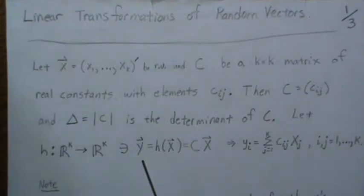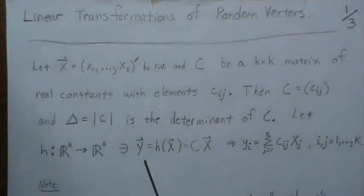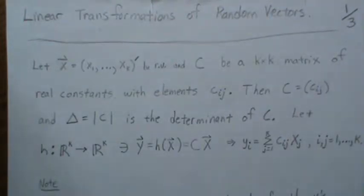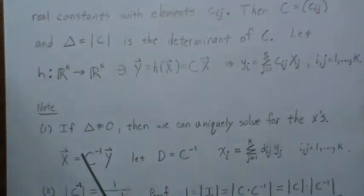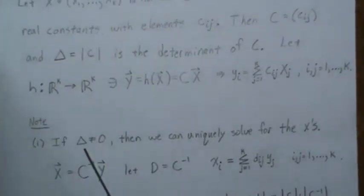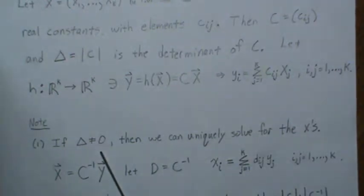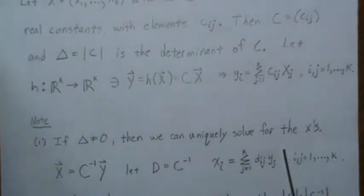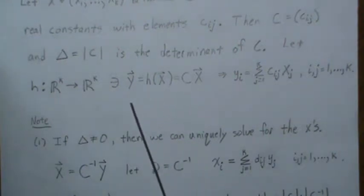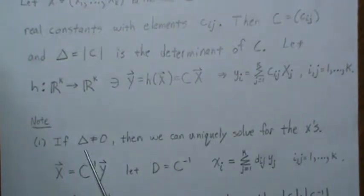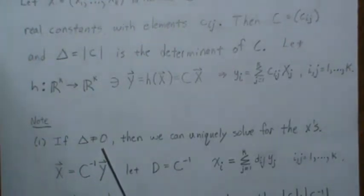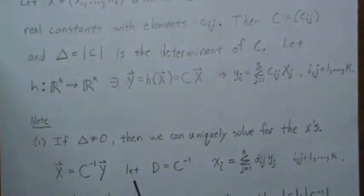We're going to find that distribution on page three, but first I want to go through some properties of linear transformations. If the determinant of C (delta) is not equal to zero, then we can uniquely solve for the X's. If we have Y equal to CX and pre-multiply by C inverse, we get X by itself. When the determinant is not zero it's a non-singular matrix, so X equals C inverse of Y.